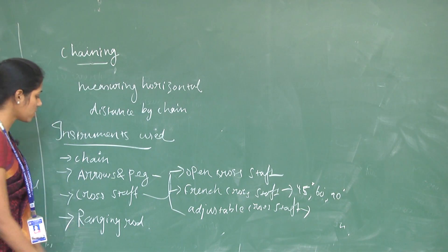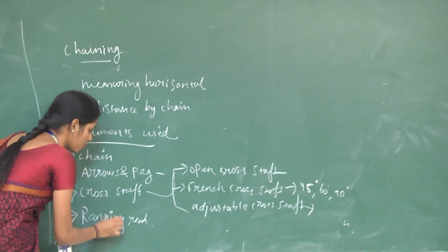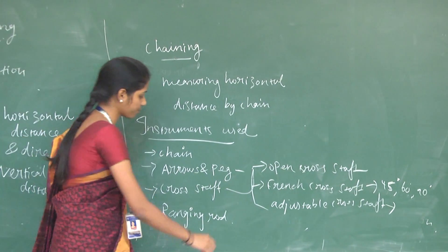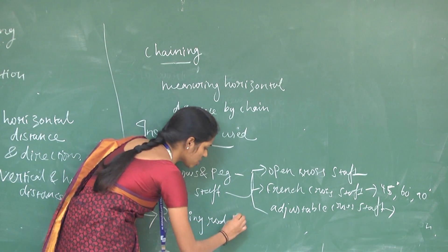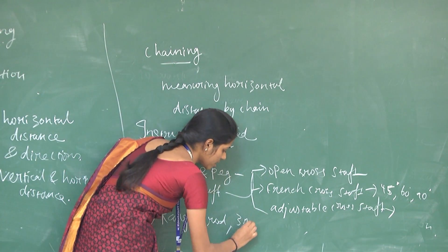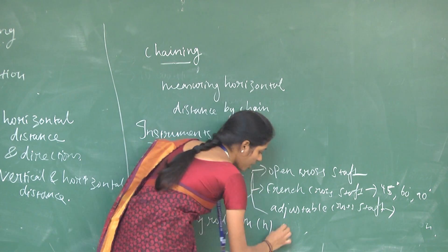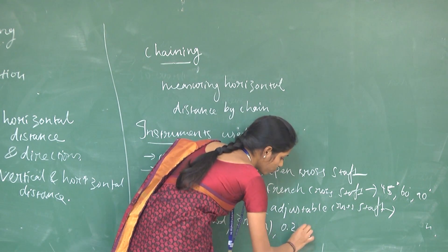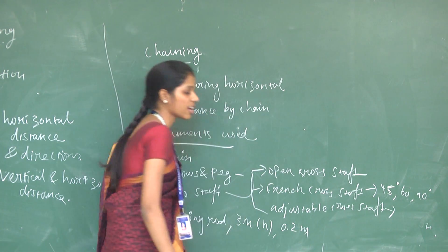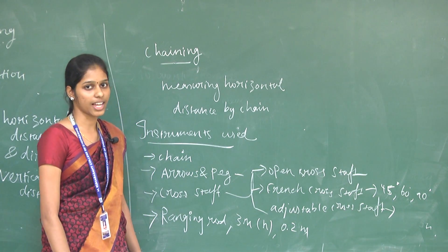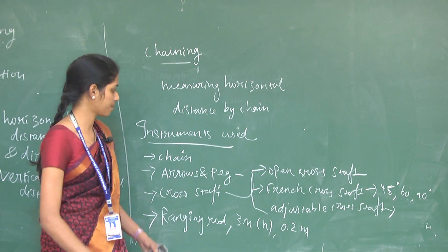Ranging rods are used for the purpose of ranging. They are generally 3 meters in height and are alternately painted red and white for every 0.2 meters.